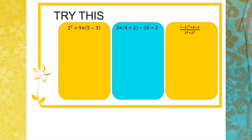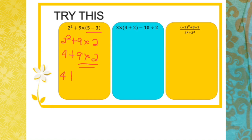Alright, let's answer. For the first one, we have 2² + 9 × (5 - 3). We do brackets first: 5 - 3 = 2, giving 2² + 9 × 2. Then the index: 4 + 9 × 2. Then multiplication: 9 × 2 = 18. Finally, 4 + 18 = 22.